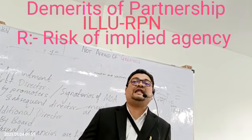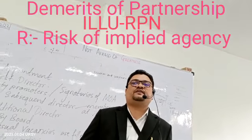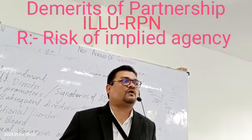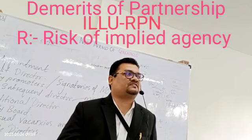U for Unlimited liability. B for public distress.